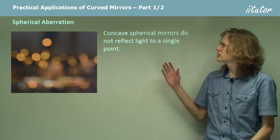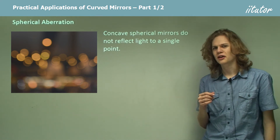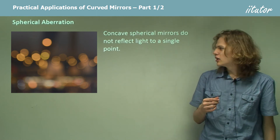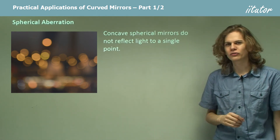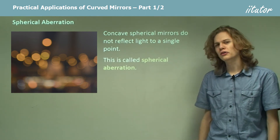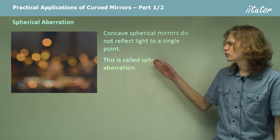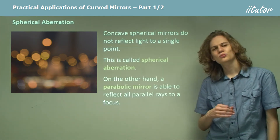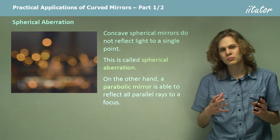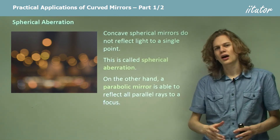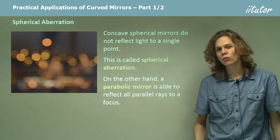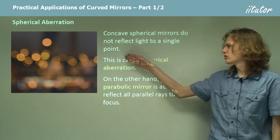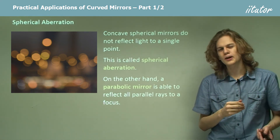Concave spherical mirrors don't reflect light to a single point, which is unfortunate. It means that if we want to make a camera using spherical mirrors, we get the sort of effect you can see on the left over here — this is called spherical aberration. You can see that it forms little circles of light instead of little points of light. A parabolic mirror is a way of getting rid of this problem.